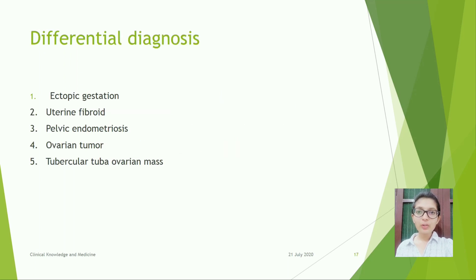Differential diagnosis of chronic PID: ectopic gestation, uterine fibroid, pelvic endometriosis, ovarian tumor, and tubercular tubo-ovarian mass.